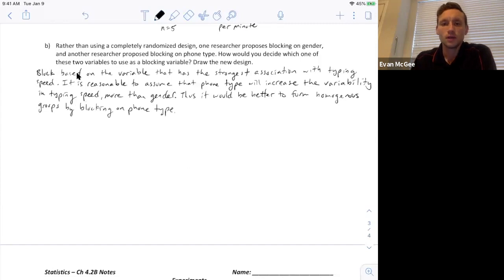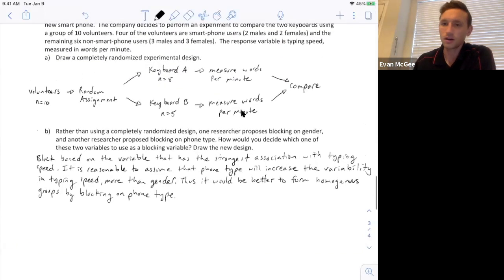So there we go. The phone type has the strongest association with the response variable typing speed and one thing I want to make sure that I make a note of is that this phone type, the phone type that they have is the variable that will increase the variability in typing speed. So the different phones add to the variation of the different typing speeds. So that's why we're another reason why we're going to want to block by phone type.